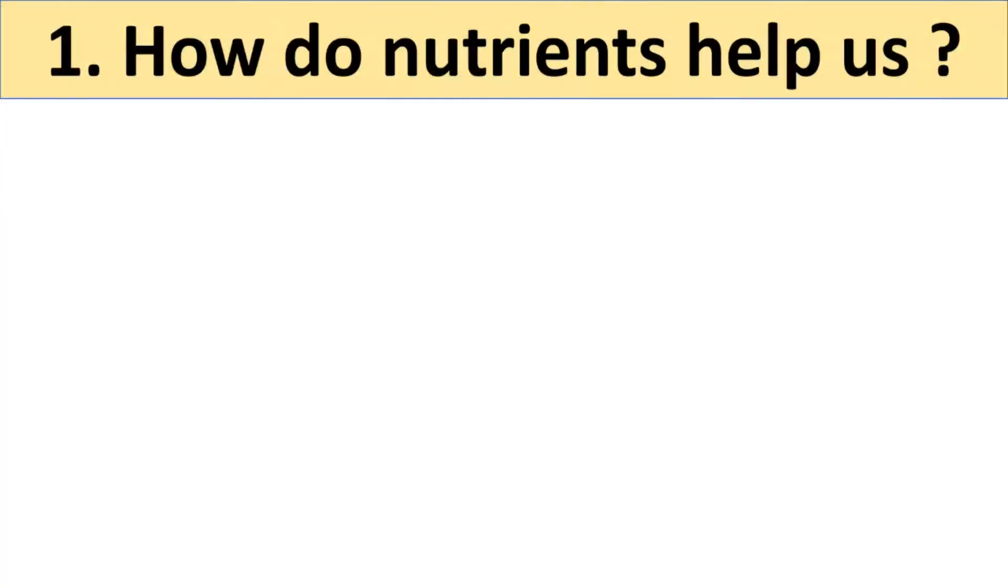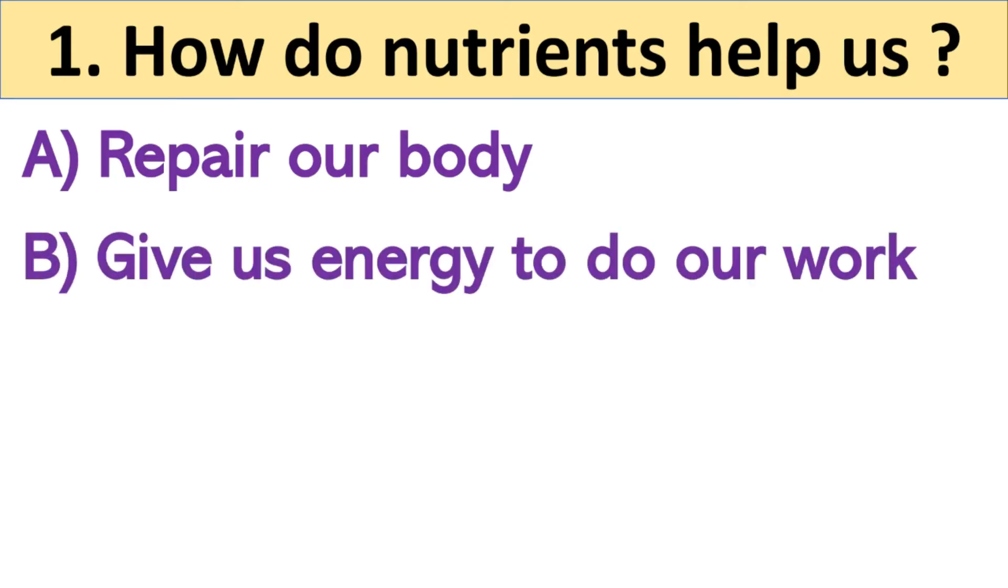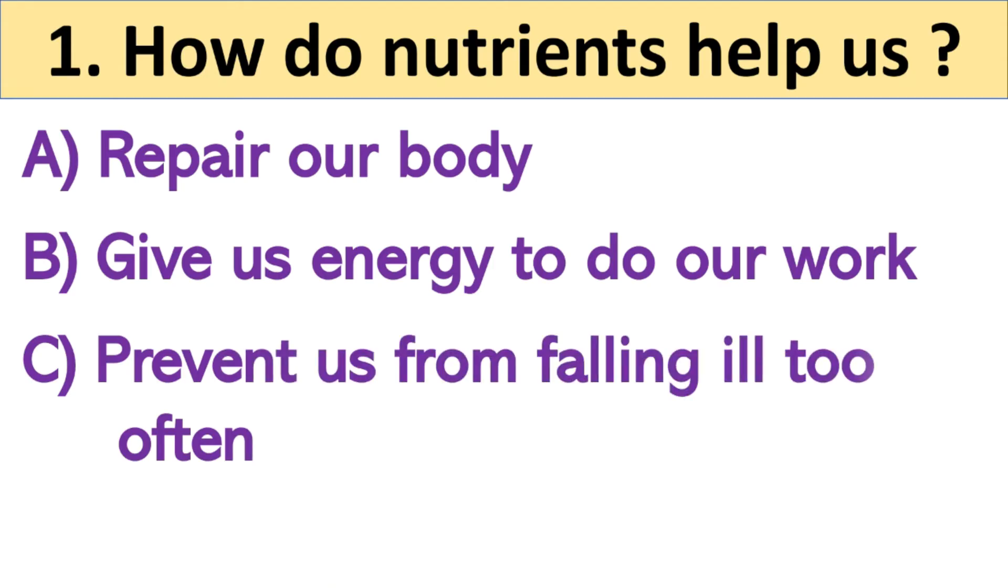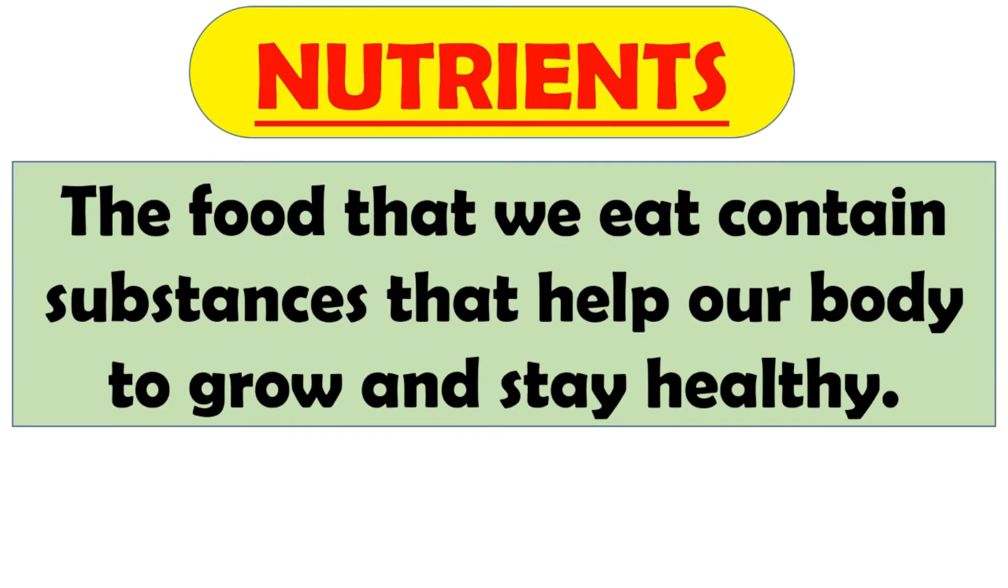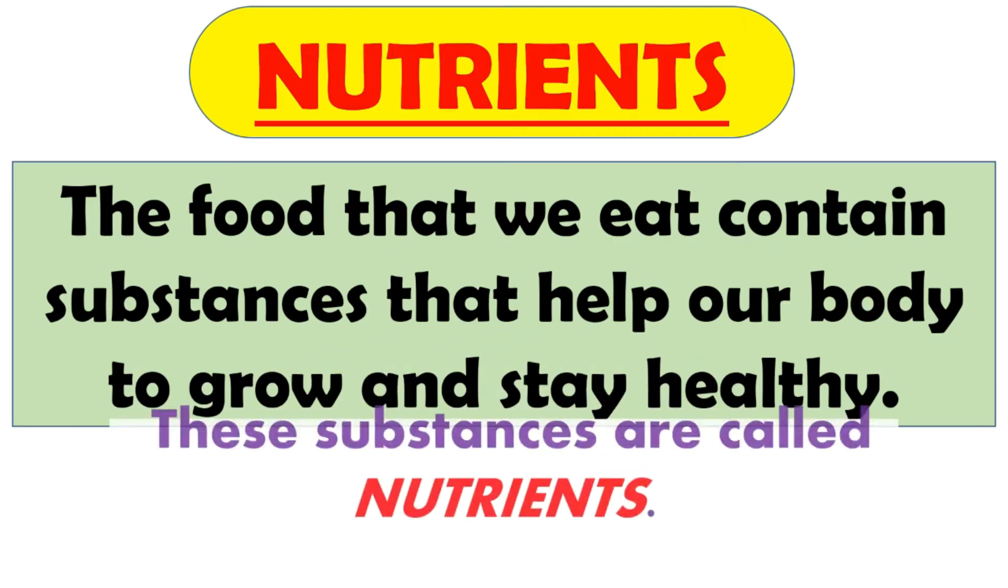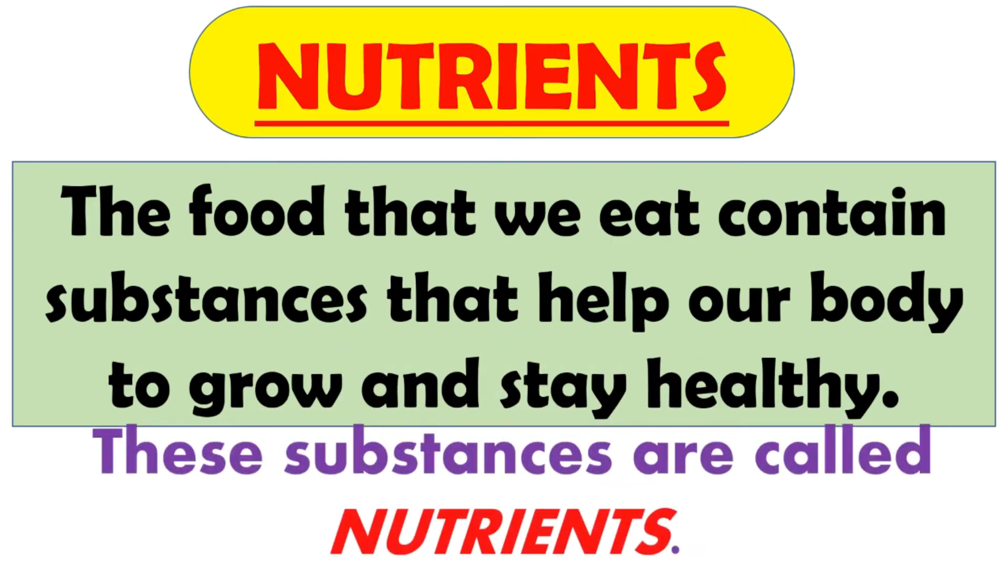And the first question is, how do nutrients help us? And the options are: A. Repair our body. B. Give us energy to do our work. C. Prevent us from falling ill too often. And D. All of these. And the right answer is all of these. So you know nutrients? The food that we eat contains substances that help our body to grow and to stay healthy. And these substances are called nutrients.